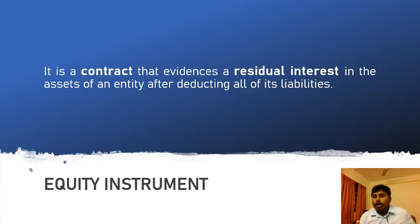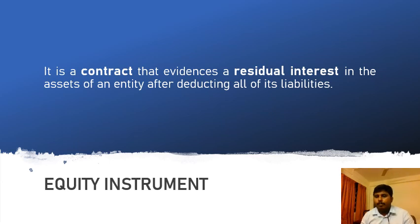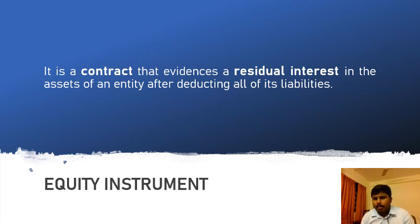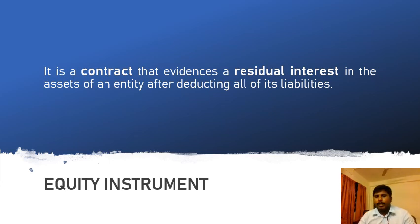The basic principles of the standard are: first, every financial instrument is to be accounted for based on the fair value concept; second, the principle of substance over form. If these two principles are kept in mind along with the definitions, you can understand how items are to be dealt with. We will next discuss accounting treatment for financial assets, financial liabilities, equity, compound financial instruments, derivative contracts, hedge accounting, impairment of financial assets, and de-recognition of financial assets and liabilities. These topics will be covered step-by-step. Thank you very much.